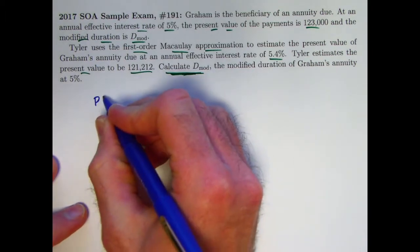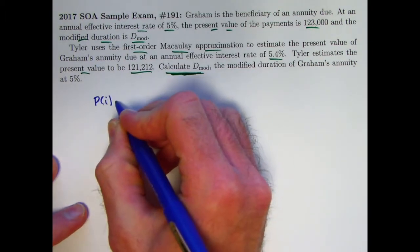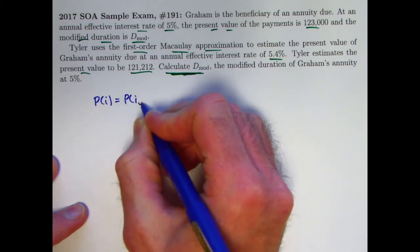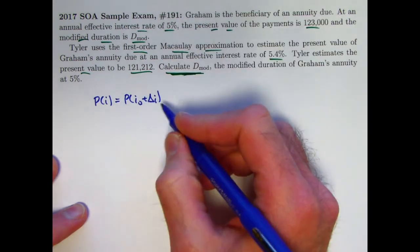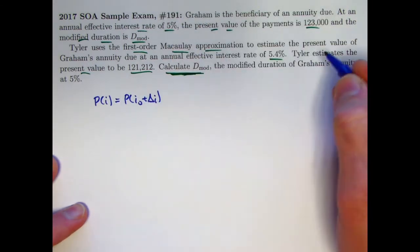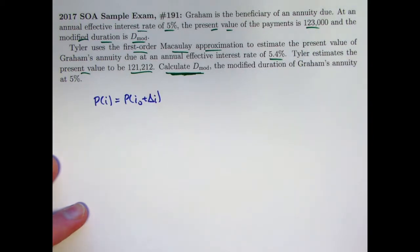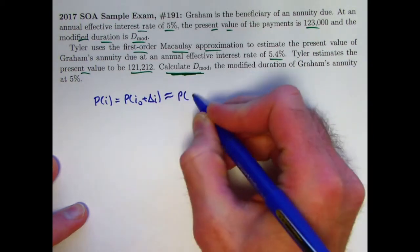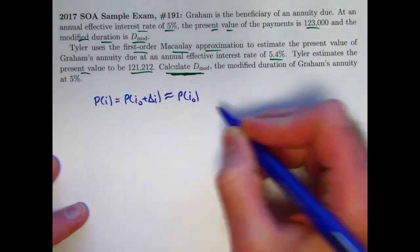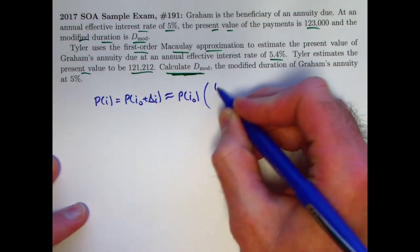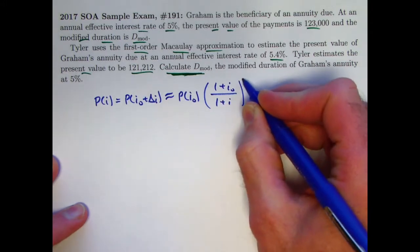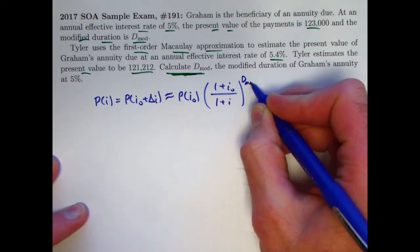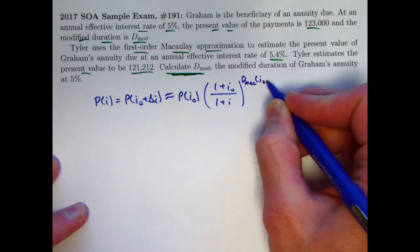Here is the first-order Macaulay approximation. P of i, or P of i0 plus delta i, where i0 would be the starting interest rate, that would be the 5%, and i, which is i0 plus delta i, would be the new interest rate that Tyler thinks about, 5.4%, is approximately the price at the original interest rate, i0, times the fraction 1 plus i0 over 1 plus i raised to the power, that is the Macaulay duration at interest rate i0.